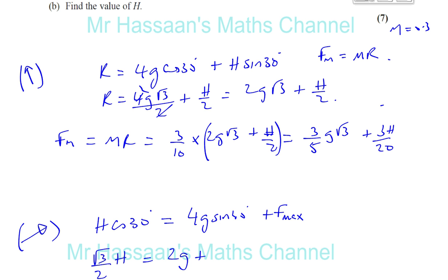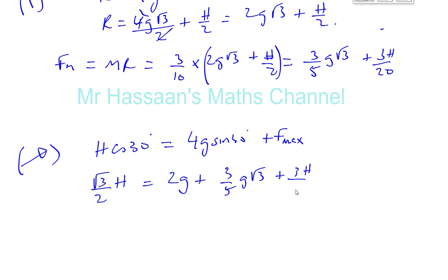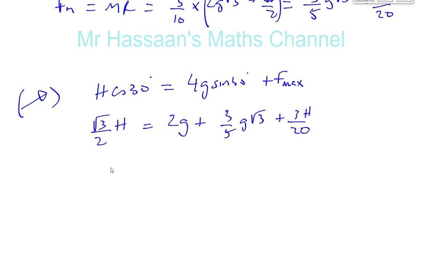So now we can find what H is. So we can say root 3 over 2 times H minus 3 over 20 times H is equal to 2G plus 3 fifths times G times root 3. Now I can turn it all to the decimals if I want and continue.